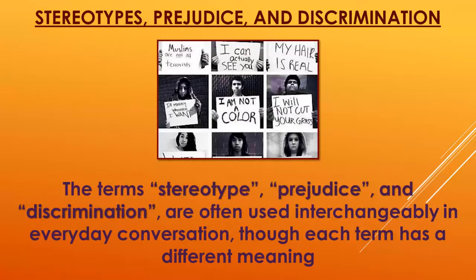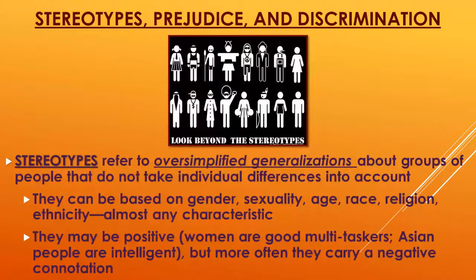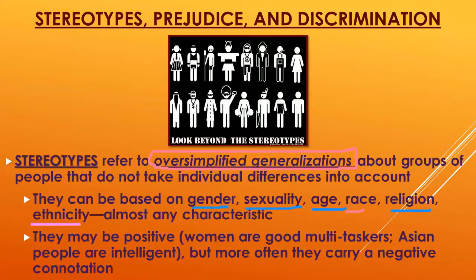Now some key definitions often used interchangeably but with distinct meanings. Stereotypes are oversimplified generalizations about certain groups of people that don't account for individuals. There are stereotypes about race, ethnicity, gender, sexuality, age, religion — almost any characteristic. We can stereotype people based on any group membership.